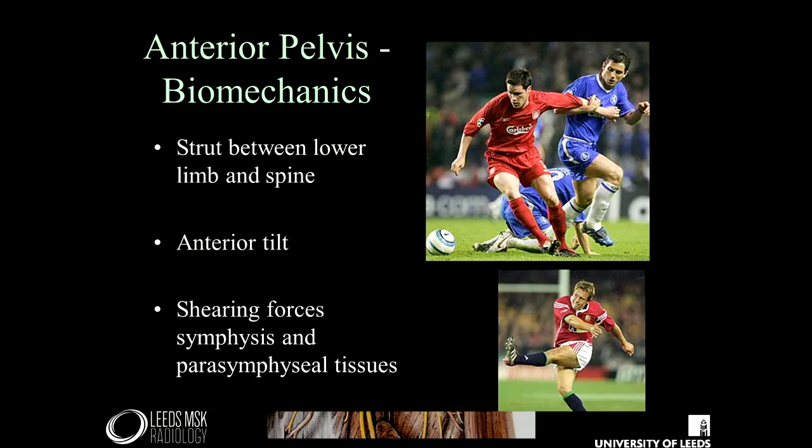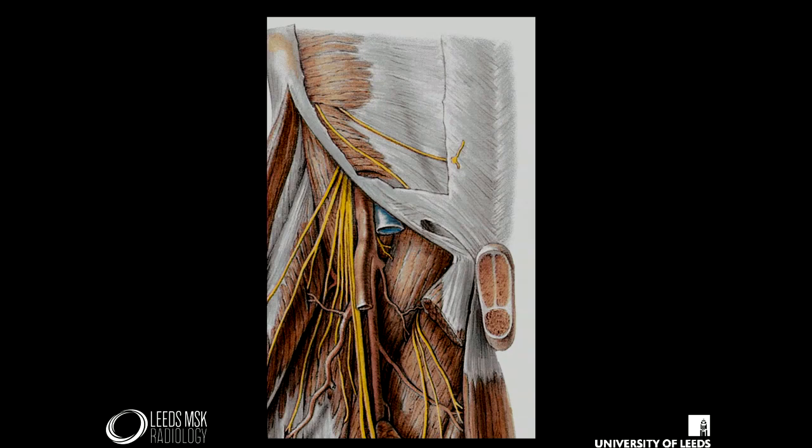In American sports, it's seen in American football and also ice hockey. Rather than that simplistic anatomical diagram, it's more of a complex process, with a number of sheaths, ligaments and tendons merging into this anterior pelvis, where there are shearing forces extending along the lower abdomen, the inguinal canal, and the adductor muscles.